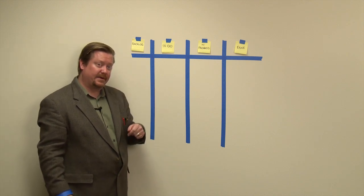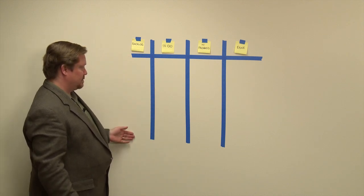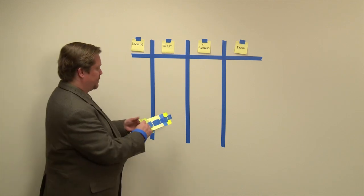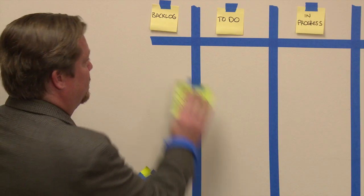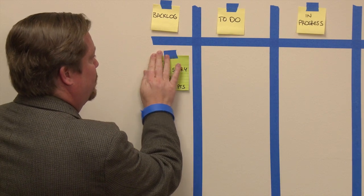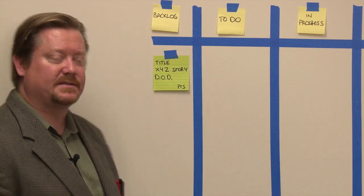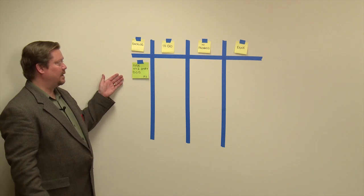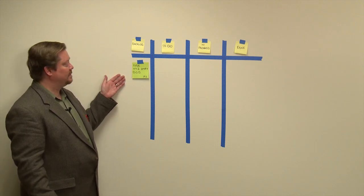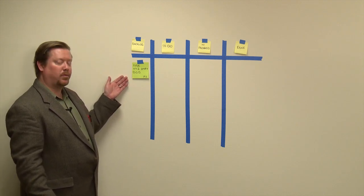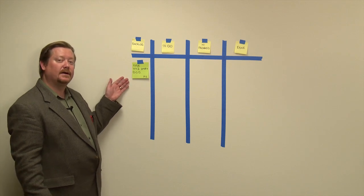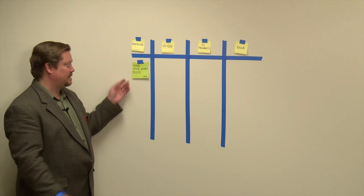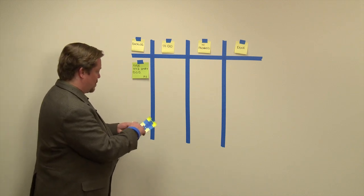Now you want to populate your backlog. You use story tickets. I like to put a certain amount of information on my story tickets: the title, an XYZ user story format, definition of done, and points. You might also put acceptance criteria on them, and you can even use the back of the ticket if you need extra room for information. So let's populate our backlog.